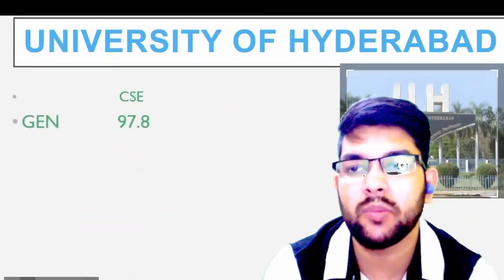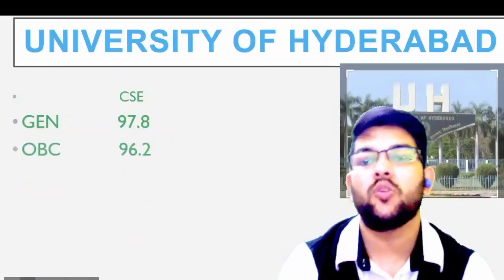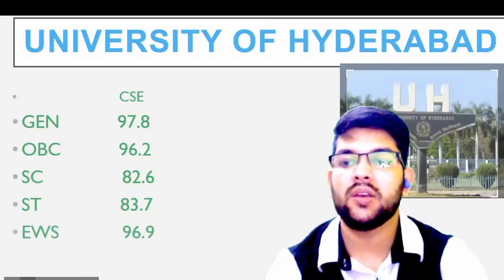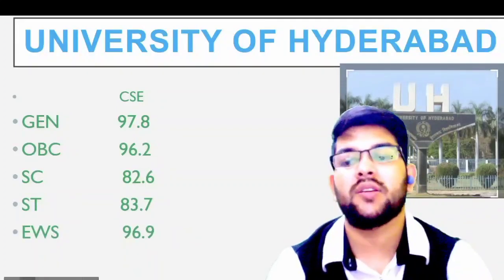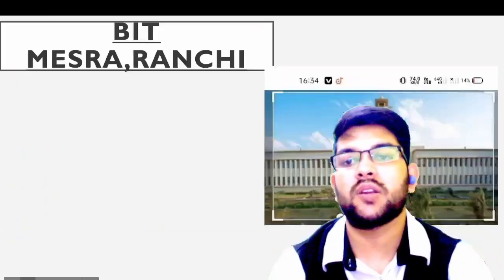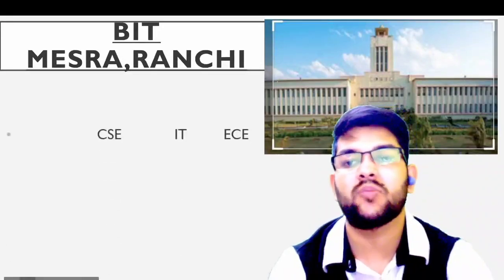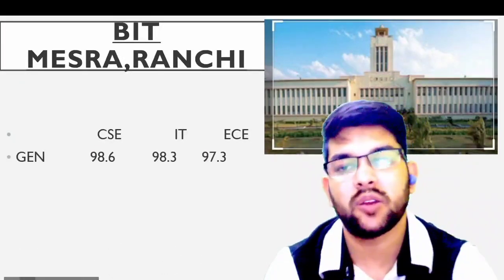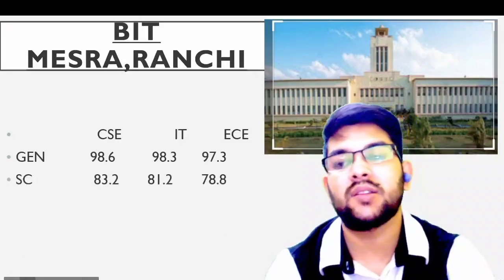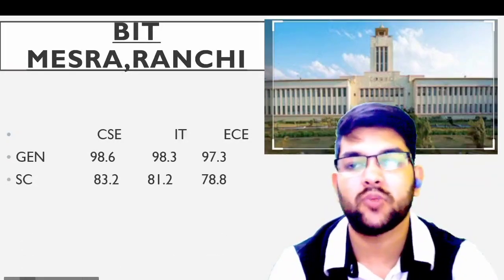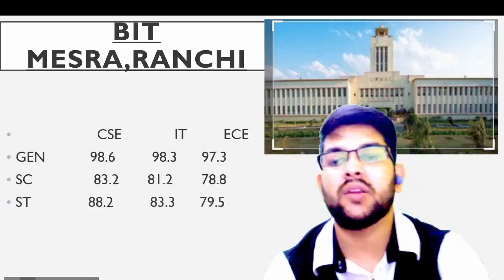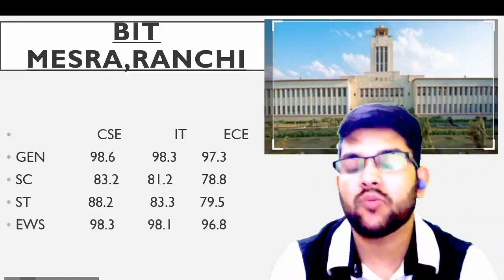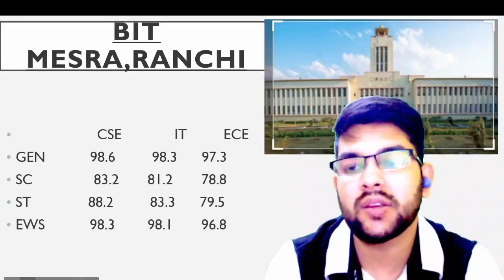Next is the University of Hyderabad. Here is the information — only CSE is available. General: 97.8. OBC: 96.2. SC: 82. ST: 83. EWS: 96.9. Next is BIT Mesra Ranchi. For general: 98.6, 98.3, and 97.3. For SC: 83.2, 81.2, and 78.8. For ST: 88.2, 83.3, and 79.5. For EWS: 98.3, 98.1, and 96.8 percentile.